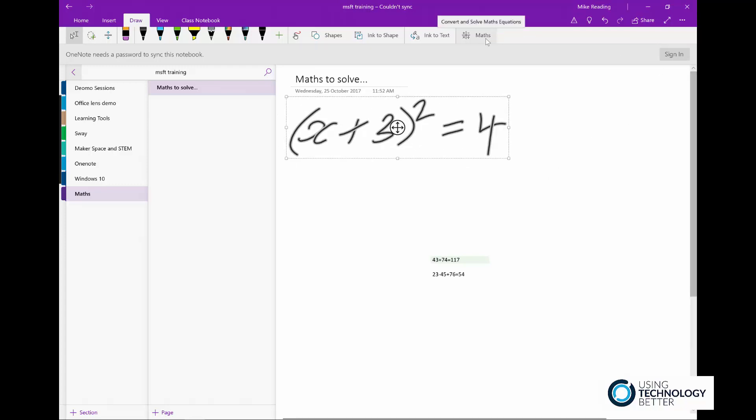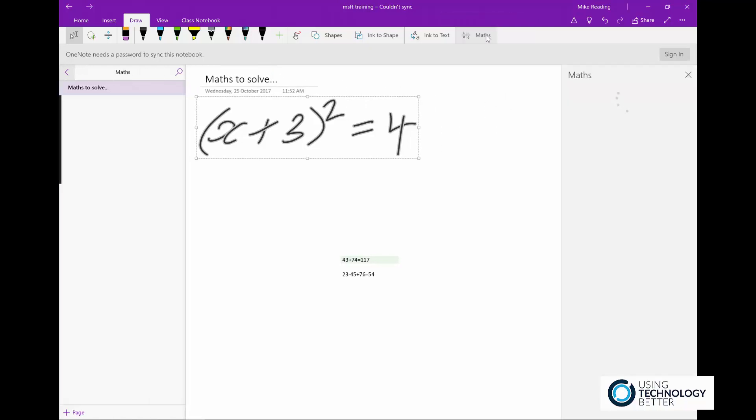And then you'll see that there is a section up here that says maths. You can also just convert this straight into text if you wanted to write out your maths questions and then convert them into a text format. Microsoft can do that for you right inside OneNote as well. So let's just click on the maths button over here.